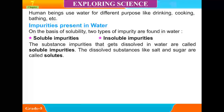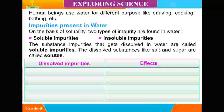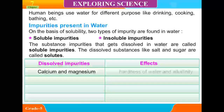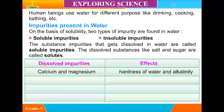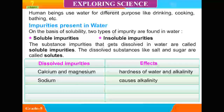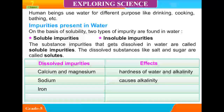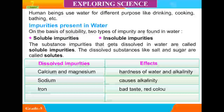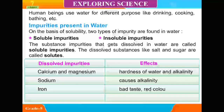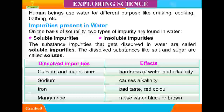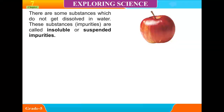The dissolved substances like salt and sugar are called solutes. Dissolved impurities include calcium and magnesium, which cause hardness of water and alkalinity; sodium, which causes alkalinity; iron, which causes bad taste and red color; and manganese, which makes water black or brown. There are some substances which do not dissolve in water. These are called insoluble or suspended impurities.